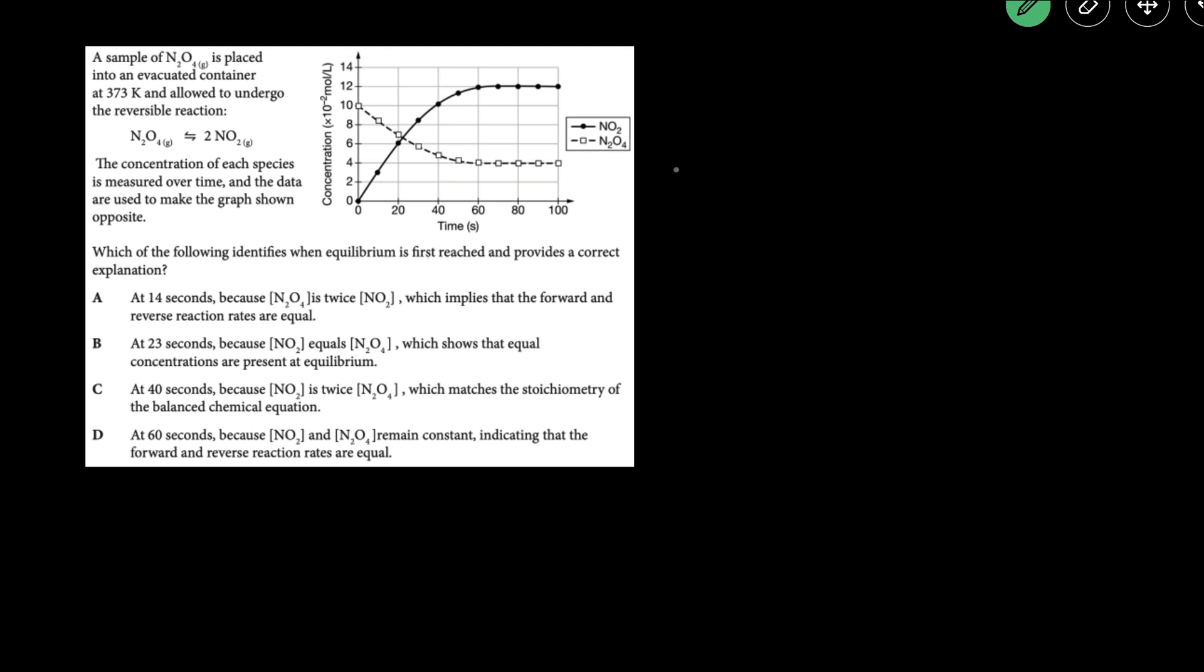So first we need to know what equilibrium is. Equilibrium is reached when the forward rate is equal to the reverse rate, when the forward reaction is equally as fast as the reverse reaction, and when that's the case the amount of reactants and products are constant, they're not necessarily going to be equal.